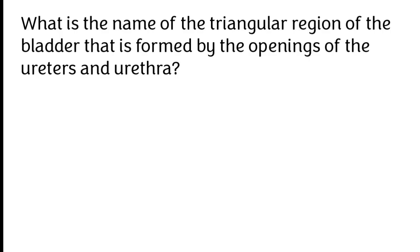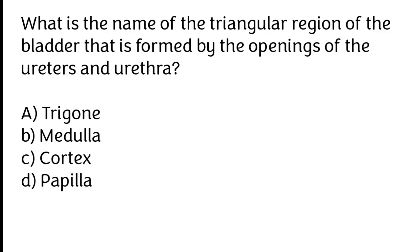What is the name of the triangular region of the bladder formed by the openings of the ureters and urethra? A) Trigone, B) medulla, C) cortex, D) papilla.